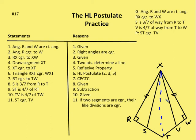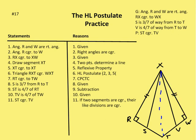Angle R and W are right angles — that's given. Angle R is congruent to W because right angles are congruent. RX is congruent to XW — that's given. Then I draw auxiliary segment XT from X to T; two points determine a line. XT is congruent to itself, and that's going to be my hypotenuse. So I can say that triangle RXT is congruent to triangle WXT by the HL postulate — hypotenuse XT, legs XR and XW, and right angles R and W.